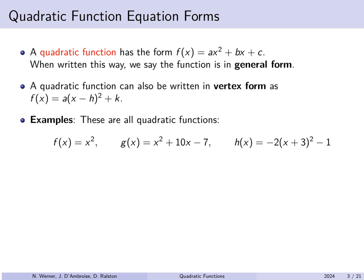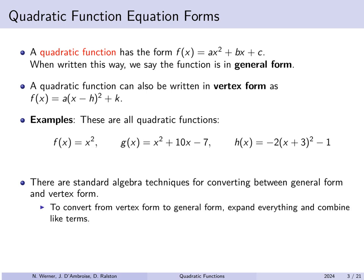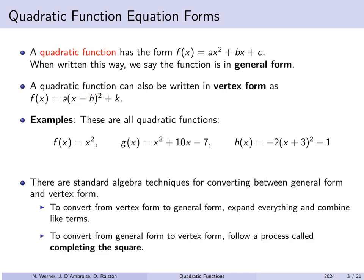g(x) is 1·x² + 10x − 7, that's a quadratic function. And h(x) is given in vertex form: negative 2 times the quantity (x + 3) squared minus 1. We can convert back and forth between the two forms using simple algebra. If you have vertex form and want general form, expand the (x minus h) squared, distribute the a, and collect like terms. To go from general form to vertex form, we complete the square, which is a bit more work but still quite doable.